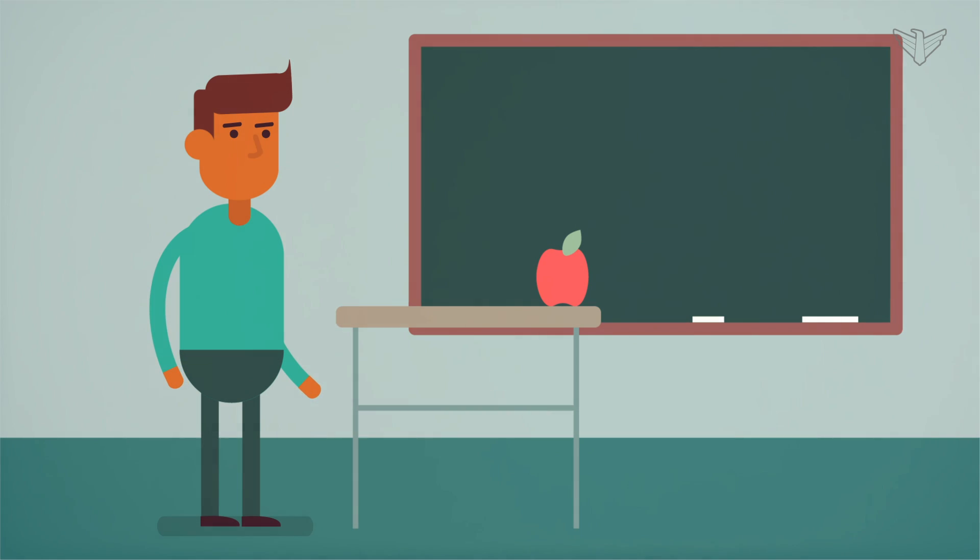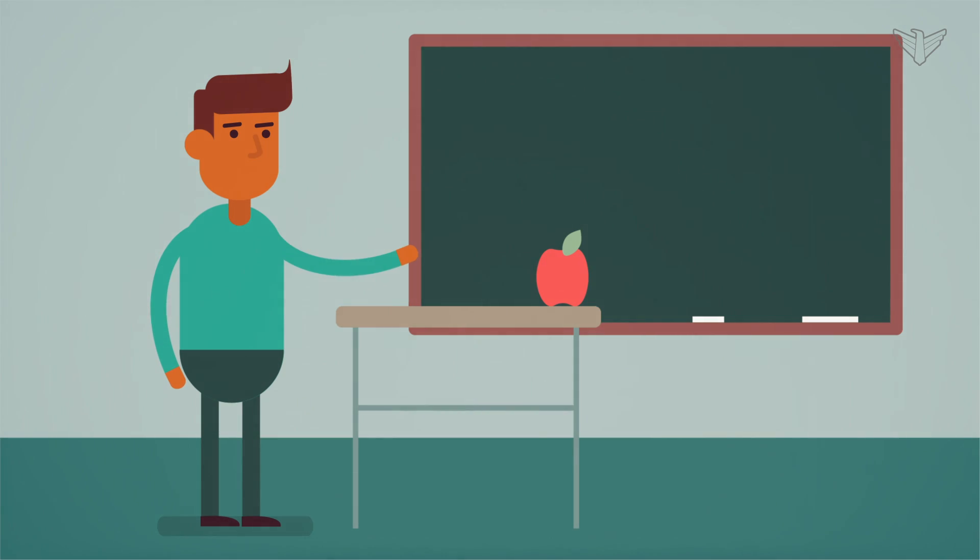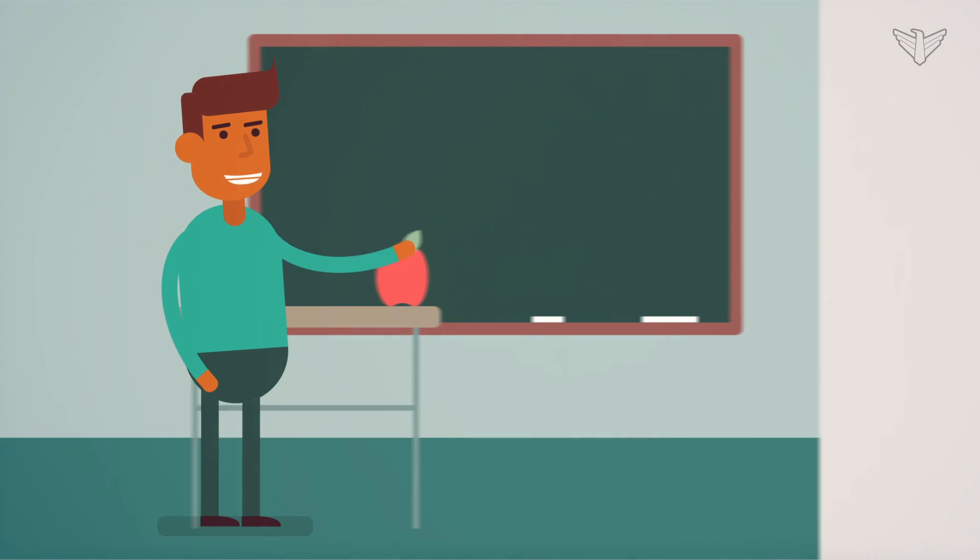In class, we learned about cardinal directions, you know, north, south, west, and east. My teacher said the tornado was spotted seven miles northeast of our school. Northeast is not one of the cardinal directions we'd learned about.